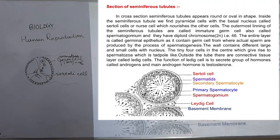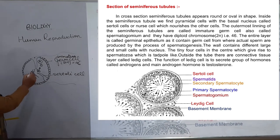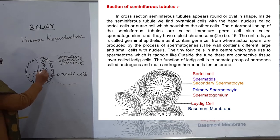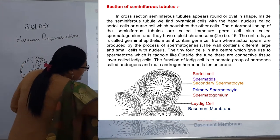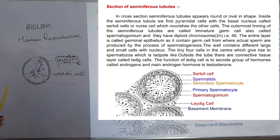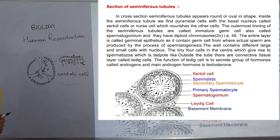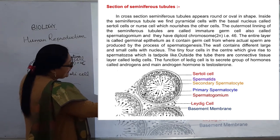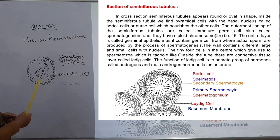The wall contains different large and small cells with nucleus. The tiny cells in the center give rise to spermatozoa, which are tadpole-like in structure with a tail. These spermatozoa, or sperm, are the mature male gametes.